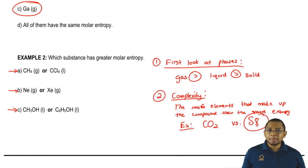Now, if they have the same number of elements that make them up, then we go to overall mass. And here for three, you're going to say more mass equals more entropy.